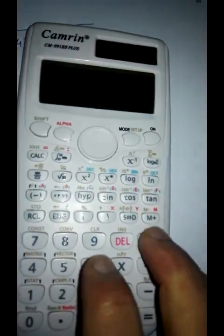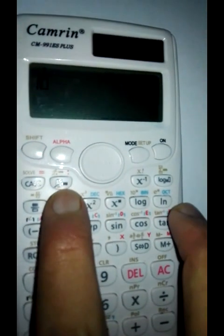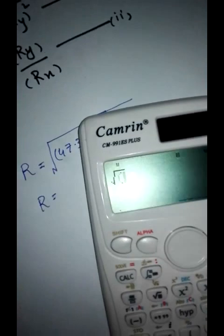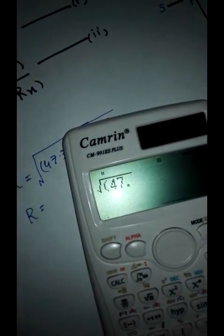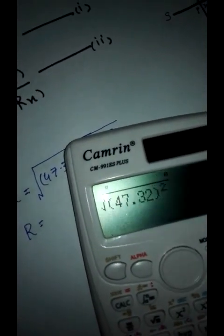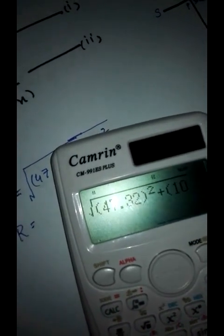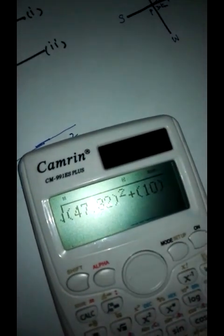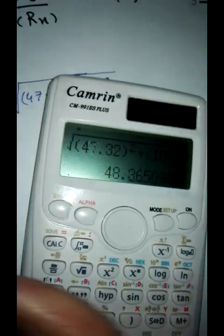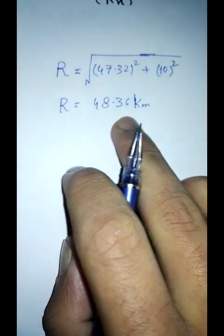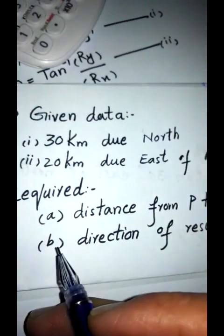So R equals 48.36 kilometers. The distance from P to R is 48.36 kilometers. So the first required condition was satisfied.